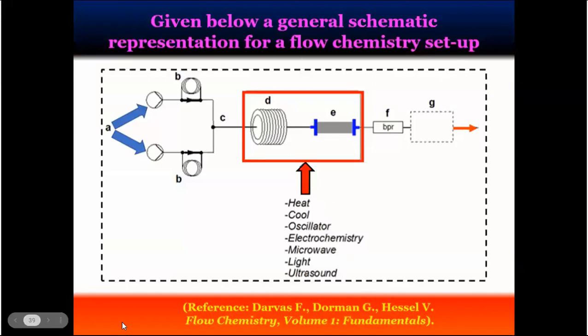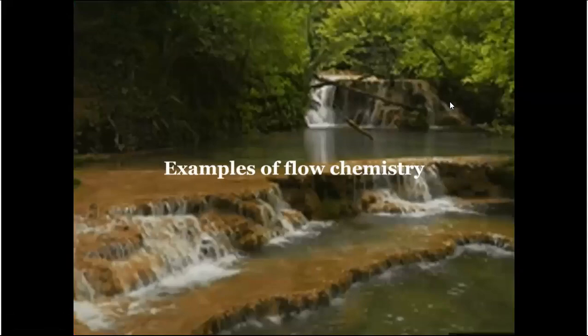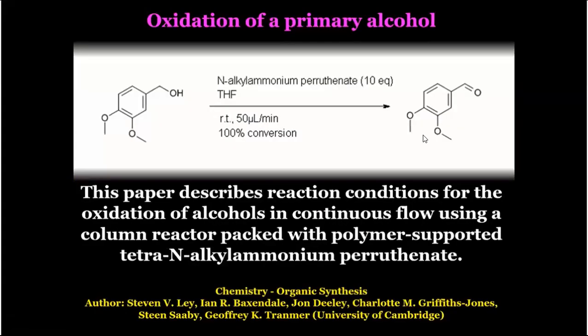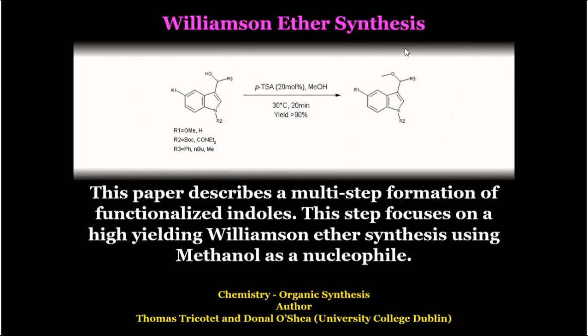Schematic representation for a flow setup: example of oxidation of primary alcohol. Using alkyl ammonium periodate, ten equivalents, tetrahydrofuran as solvent, with specific retention time. Flow rate 15 microliter per minute gives 100% conversion. Using a column reactor packed with polymer-supported tetra-alkyl ammonium periodate. Williamson's ether synthesis is another example.